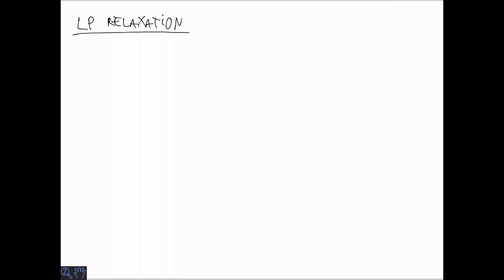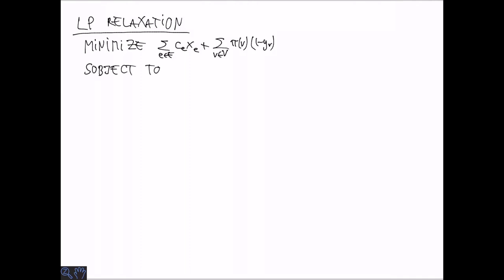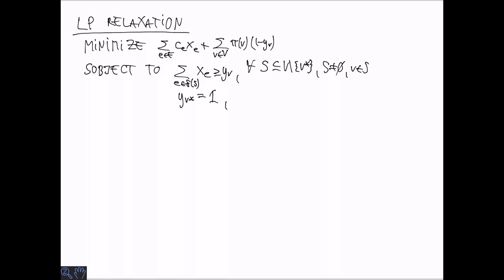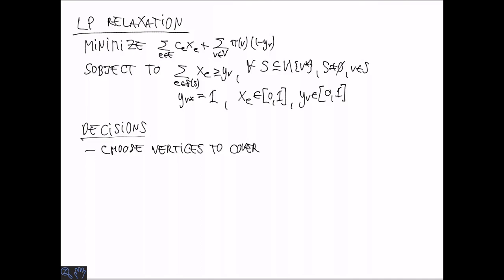Now we are ready to formulate the LP relaxation. For each S ⊆ V \ {v*}, S non-empty, and each v ∈ S, the constraint is Σ_{e ∈ δ(S)} x_e ≥ y_v. We also require the root to be in the tree. All decision variables x_e and y_v must be in the interval [0, 1]. This LP relaxation no longer requires 0-1 integrality—just values in [0, 1].